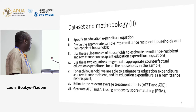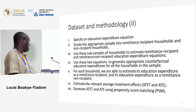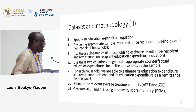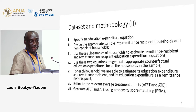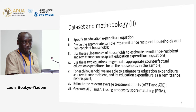With this we are able to estimate for each household what that household's education expenditure would have been in a situation where that household were to receive remittances, and also in a scenario where it does not. Using the treatment effects literature, we are then able to calculate the average treatment effect on those who actually receive remittances (ATT) and also the average treatment effect for all households irrespective of remittance receipt status.